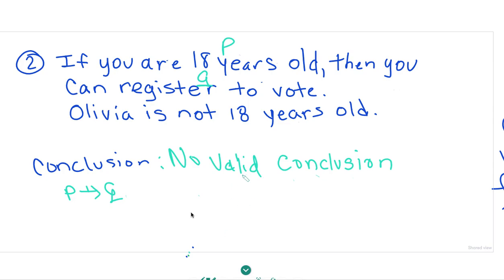I cannot assume that she can register to vote. Although we know that she's not 18, we don't know that she's not 24. So we have to look to make sure that the hypothesis that we're given is true. That is law of detachment.